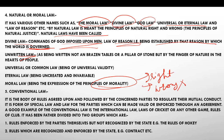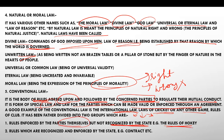Conventional law is the body of rules agreed upon and followed by concerned parties to regulate their mutual conduct. States or governing parties make rules that everyone mutually agrees to and follows. It is a form of special law and law for the parties, which can be made valid or enforced through an agreement. A good example is international law, where two or more states agree to follow certain rules. Another example is law of cricket or gaming associations. This can be divided into two: rules enforced by state — like the Contract Act, where any two parties entering a contract are bound by law — and rules made by parties themselves but not recognized by the state, like rules of hockey or cricket associations.